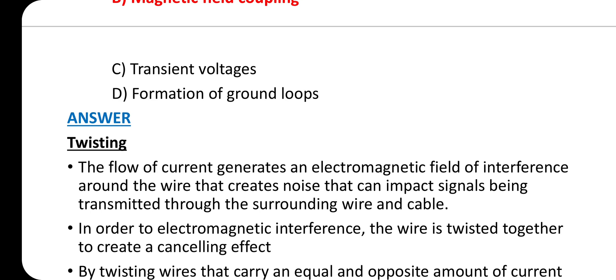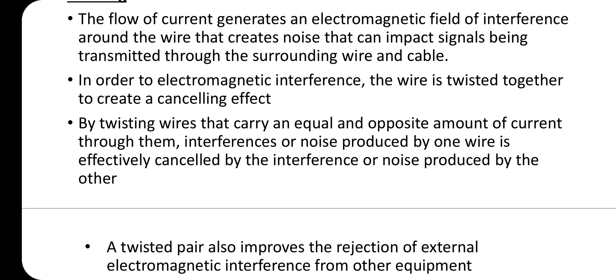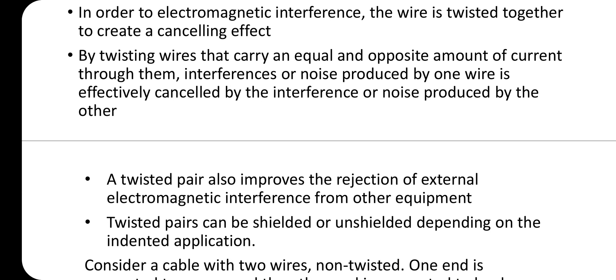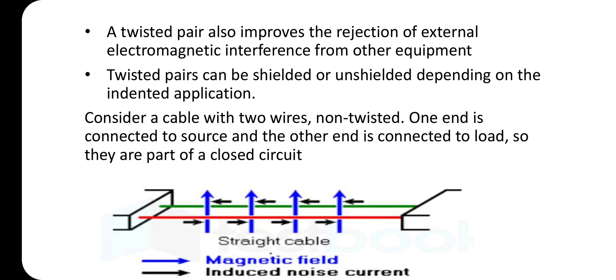Wires or conductors used in power systems transmit power by electric current. The current flow generates an electromagnetic field around the wire that creates noise impacting signals in surrounding wires. To reduce electromagnetic interference, wires are twisted together to create a canceling effect. By twisting wires carrying equal and opposite currents, the interference produced by one wire is effectively canceled by the other. Twisted pairs improve rejection of external electromagnetic interference and can be shielded or unshielded depending on application.